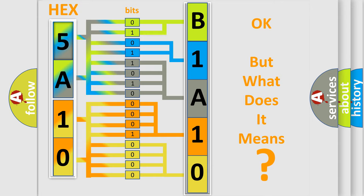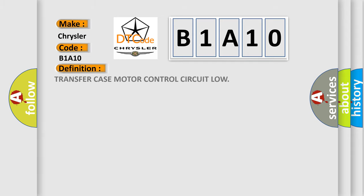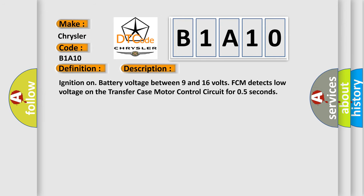The number itself does not make sense to us if we cannot assign information about what it actually expresses. So, what does the diagnostic trouble code B1A10 interpret specifically for Chrysler car manufacturers? The basic definition is: Transfer case motor control circuit low. Ignition on, battery voltage between 9 and 16 volts — the FCM detects low voltage on the transfer case motor control circuit for 0.5 seconds.